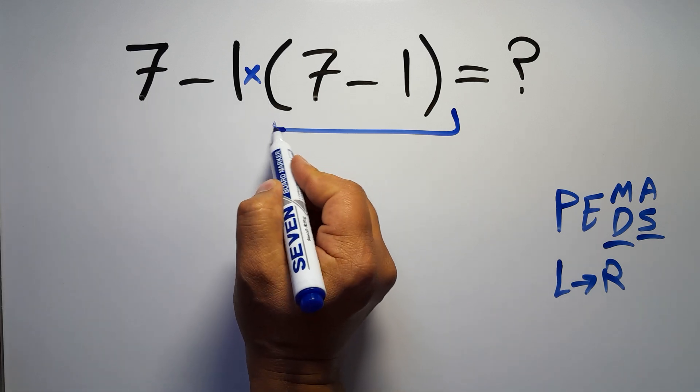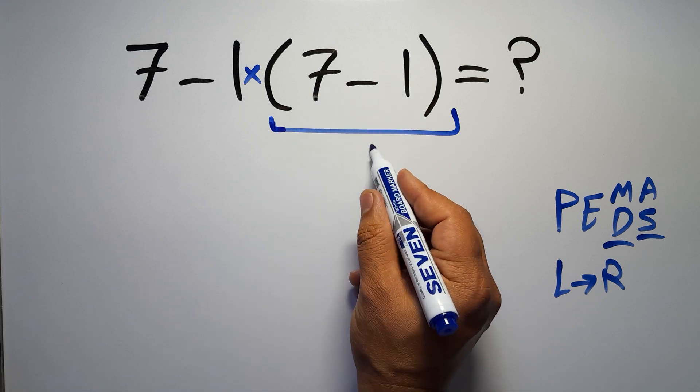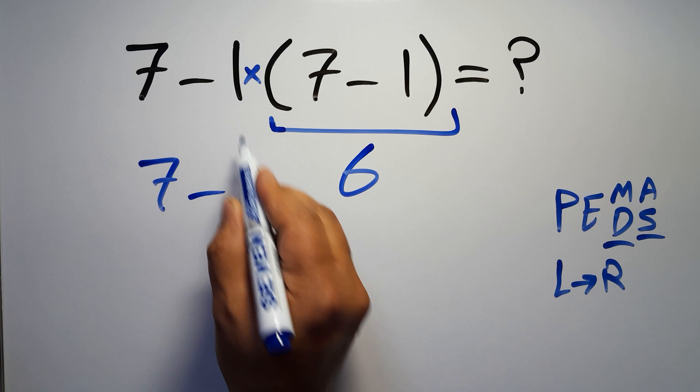So first this parentheses. Inside this parentheses we have 7 minus 1 which gives us 6, so 7 minus 1 times 6.